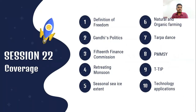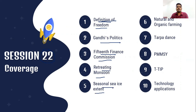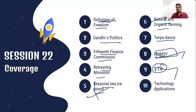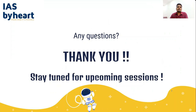We have now completed Session 23. We covered: definition of freedom from polity, Gandhian politics from modern Indian history, 15th Finance Commission from economics, climate seasons from geography, seasonal sea ice extent differences between Arctic and Antarctic from environment, natural and organic farming from agriculture, Warli painting from culture, Pradhan Mantri Matsya Sampada Yojana from welfare schemes, transatlantic trade and investment partnership from international relations, and technology applications from science and technology. We have covered diverse topics from diverse sources. If you have any queries, post them and we will be glad to solve them. Stay tuned for upcoming videos. Thank you.